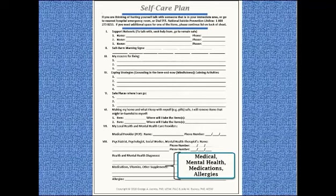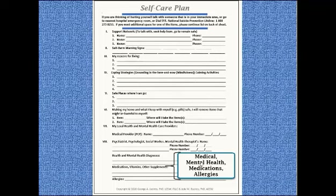The self-care plan is a synthesis of several app and paper safety plans. Important items that were not included in safety plans examined by Jacinto and Bucky were health, mental health, allergies, medications, vitamins, or supplements — these have been added to the bottom of the form. If one is in crisis and unconscious when discovered, this information may be critical to the way a person might be treated. In this COVID-19 period, this type of information could be a benefit to many whether they are in a suicidal crisis or not. When confronted with various crises in our lives, having an emergency checklist on hand could be life-saving.